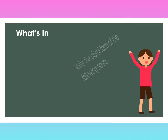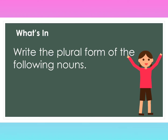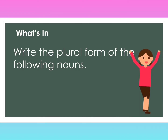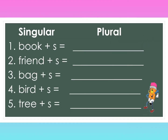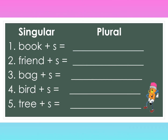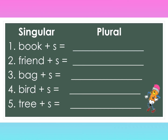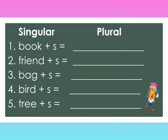What's In: Write the plural form of the following nouns. We have singular and plural forms. Number one: book + s = books. Number two: friend + s = friends. Number three: bag + s = bags. Number four: bird + s = birds. Number five: tree + s = trees.